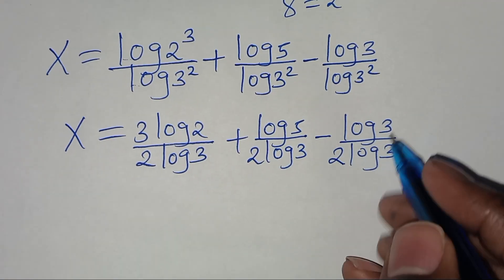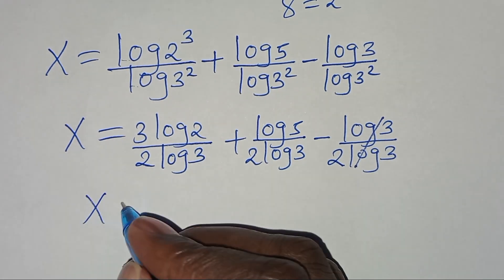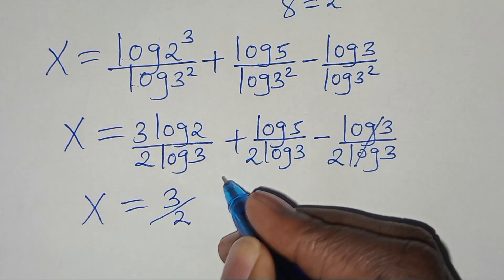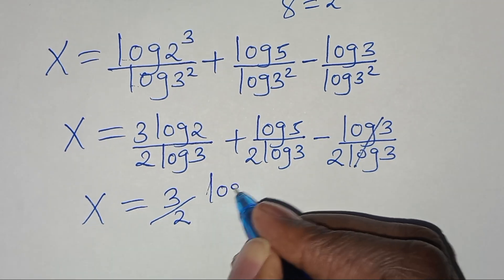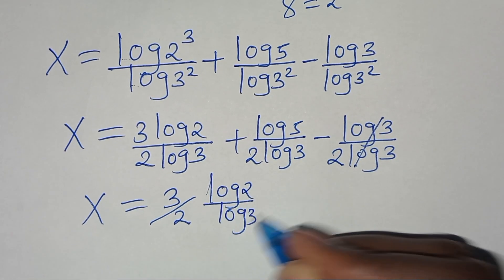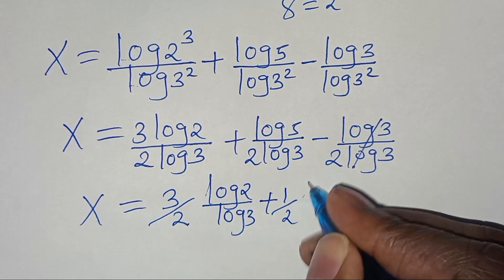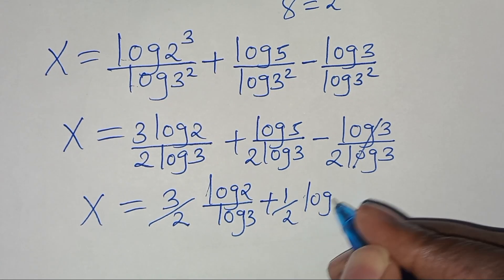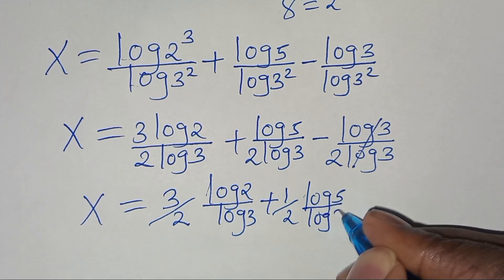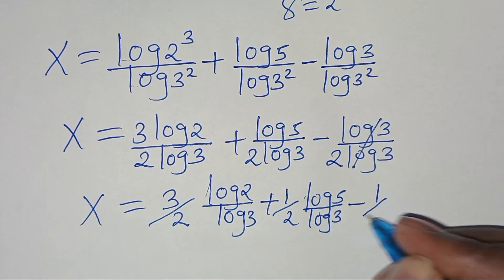Simplifying log 3 and log 3, we get x equal to 3 over 2 times log 2 divided by log 3, plus one half times log 5 divided by log 3, minus one half.